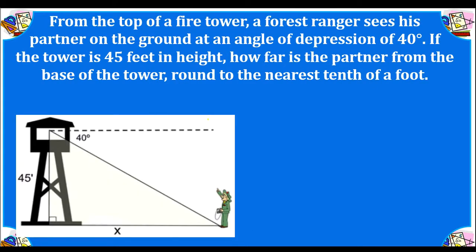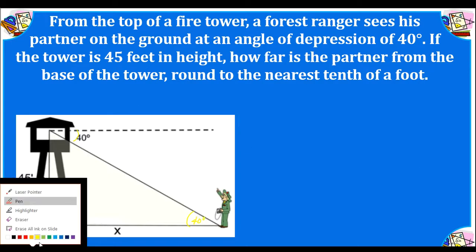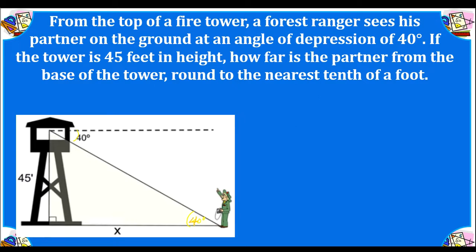From the top of a fire tower, a forest ranger sees his partner on the ground at an angle of depression of 40 degrees. If the tower is 45 feet in height, how far is the partner from the base of the tower? Round to the nearest tenth of a foot. We can use the angle of depression and know that it's congruent to the alternate interior angle of elevation, so that angle is also 40 degrees. Alternatively, since we know this angle is 90 degrees, we could subtract 40 from 90 to get 50. We could use 50 as a reference point or use 40 — it does not matter. I'll use 40 as the reference point.